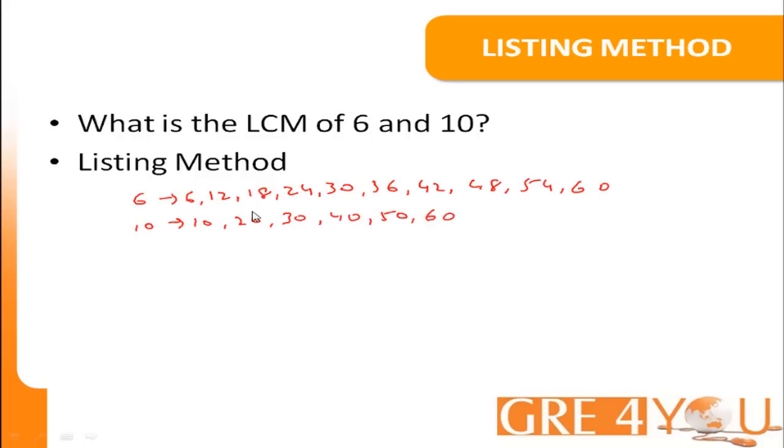Now, inspect the list of numbers over here, and notice that 30 occurs in both lists. And the same happens for 60. Therefore, the common multiples of 6 and 10 are 30 and 60. However, what we're looking for is the least common multiple, and that would be 30.